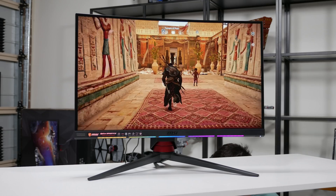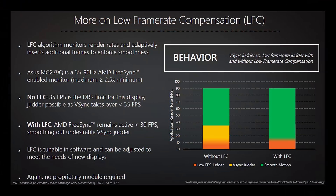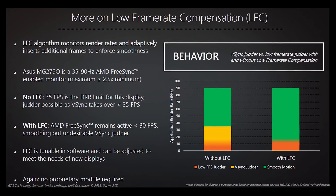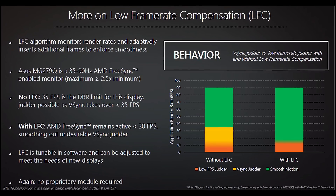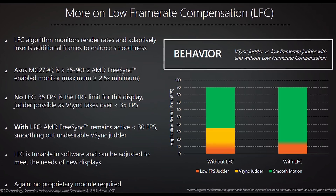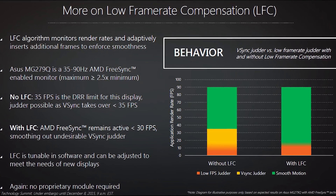That's because the GPU's render rate is out of sync with the display's refresh rate. LFC extends the window in which you can sync the render rate to the refresh rate using Adaptive Sync. When the frame rate falls below the minimum refresh rate, frames are simply displayed multiple times and the display runs at a multiple of the required refresh rate. In my previous example, to display 40 FPS using LFC, every frame is doubled and the output is synced to the display running at 80Hz.